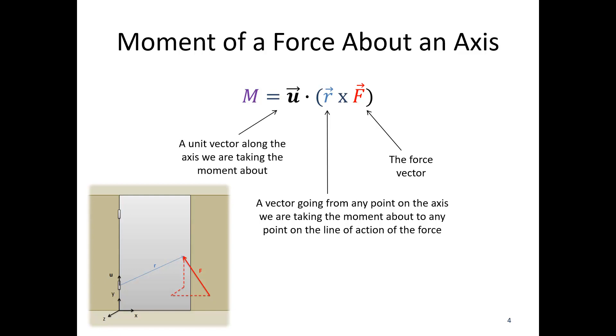Finally we have u. u is a unit vector which means it has a total length of 1 and it's acting along the axis we're taking the moment about. In this case my hinges line up with the y-axis so the unit vector would have a length of 1 in the y-direction: 0, 1, 0. That is a vector of length 1 along the y-axis for my given problem.